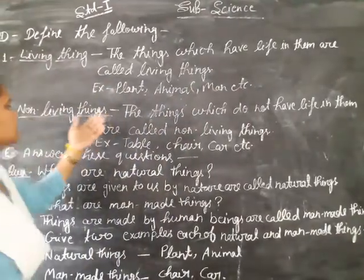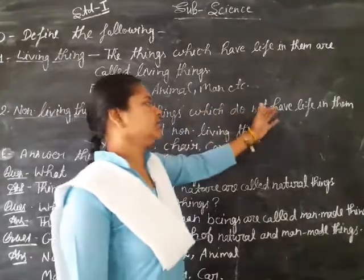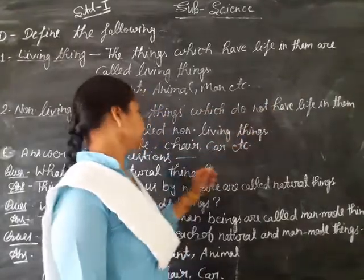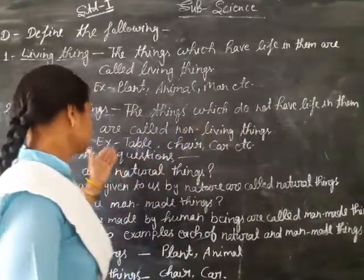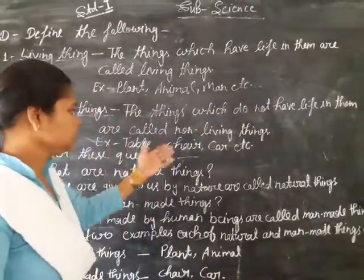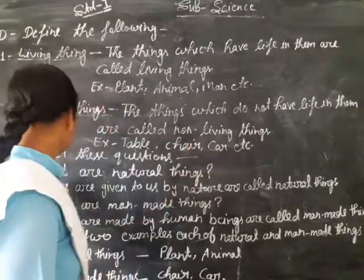Non-living things: the things which do not have life in them are called non-living things. For example, table, chair, car, etc.